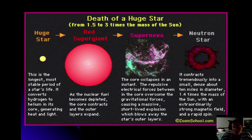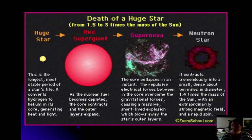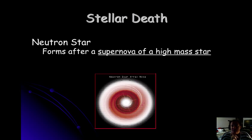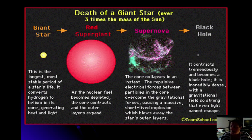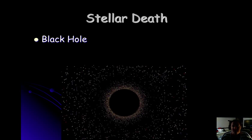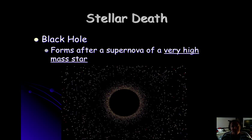For a larger star, there are two possible paths depending on its size. A huge star becomes a red supergiant, then supernovas, and eventually turns into a neutron star. A neutron star forms after a supernova of a high-mass star. A giant star — the biggest type, more than three times the mass of our sun — also becomes a red supergiant, then supernovas, and becomes a black hole. That is how black holes form.